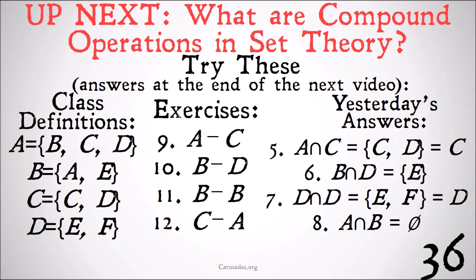The intersection between A and C is the set {C, D} or just C because once again C is a subset of A. The intersection between B and D is the class that only contains {E} because E is the only member that's shared between them. The intersection of D and itself is simply {E, F}, and the intersection of anything with itself is just going to be that class. And the intersection of A and B is going to be the null set because they don't share any members.